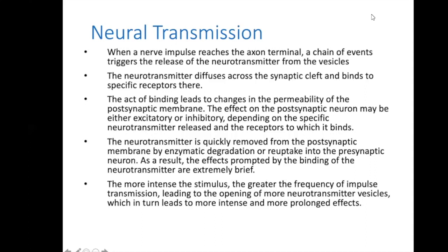Some of the neurotransmitter is re-taken up into the pre-synaptic neuron, and the neurotransmitter — mainly acetylcholine — is manufactured again. The more intense the stimulus, the greater the frequency of neurotransmitter release, and the greater the frequency of release, the greater the action on the muscle.